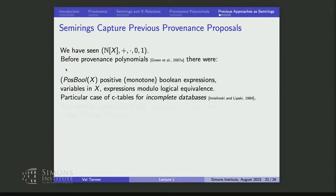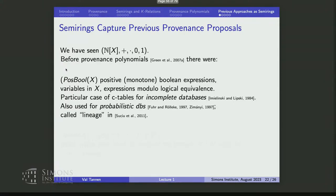I recall the first time I told Serge Abiteboul what I was doing and said 'provenance,' and he said 'you mean c-tables.' He was, as usual, absolutely right — it's just a matter of looking at c-tables in a different way than describing incomplete databases; you can think of them as capturing provenance. They were used for probabilistic databases early on by Fuhr, Rölleke, and Zimany. Then this book by Dan Suciu, Christophe Koch, and Chris Ré calls these boolean expressions 'lineage.'